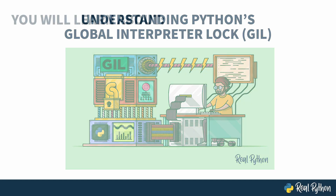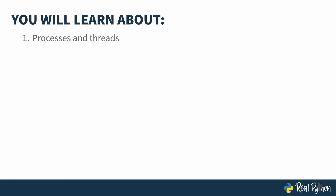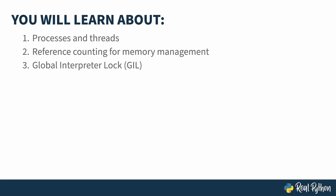To understand the GIL, you first need to know a little bit about concurrency, and then how Python manages memory cleanup. Once you understand those two concepts, you can see why the GIL exists, and then better understand how it affects your code.